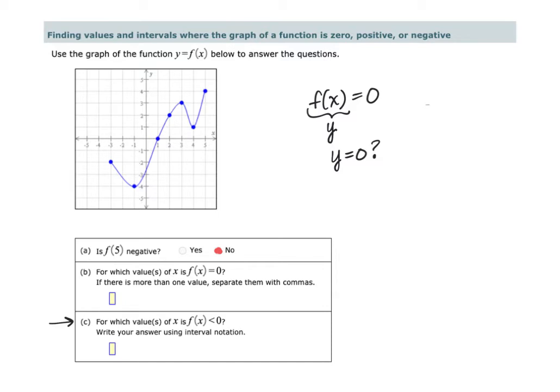So when the y values are zero, we're basically looking for the x-intercepts of the graph. Where does this graph touch or cross the x-axis? So on this graph, we have an x-intercept right here. This is the coordinate 1 comma 0.